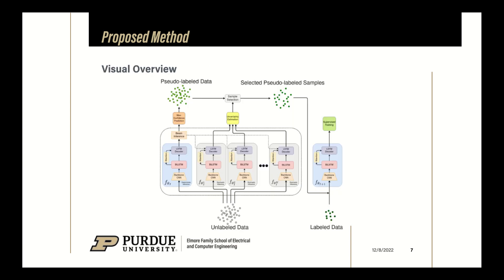To summarize our method: first, we query all the unlabeled examples and obtain the top B predictions using beam search and assign the highest probability predictions as the pseudo-labels. Then, we create different instances of the trained model using dropout and query the unlabeled examples to compute the uncertainty in its prediction, and then select only those examples with uncertainty values less than a set threshold.